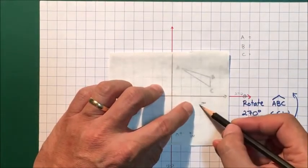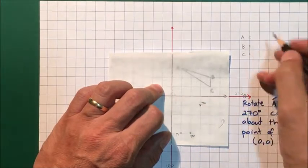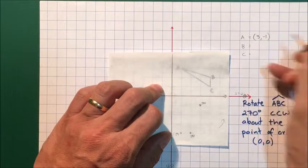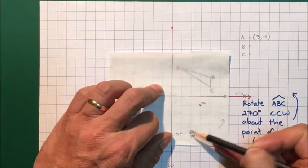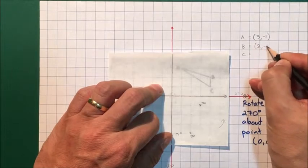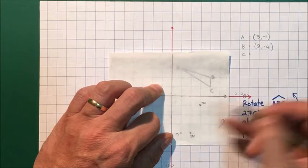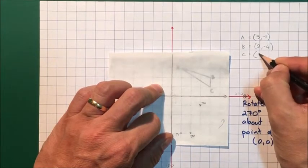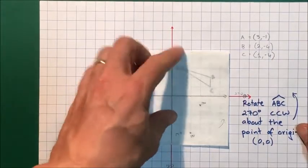coordinates of the images. For A, it'll be 1, 2, 3, and then minus 1, so it's (3, -1). B is 1, 2, and then 1, 2, 3, 4 down, so (2, -4). And C is 1 and then 1, 2, 3, 4 down, so (1, -4). Those are the coordinates of the image. I'm just going to plot them now.